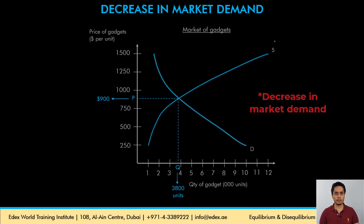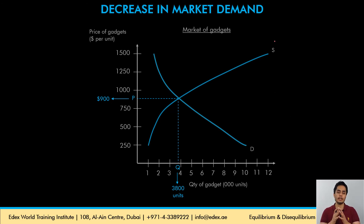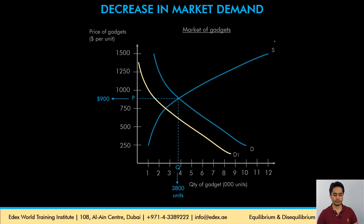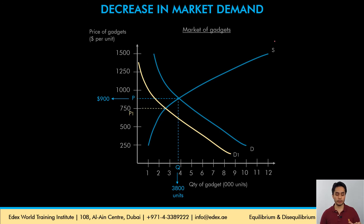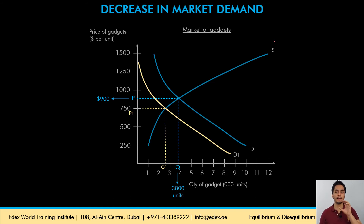If there is a decrease in market demand — due to a fall in income, an increase in taxes, a fall in the prices of substitutes, or an increase in the price of complements — the demand curve shifts to the left. At the current price level, the quantity supplied is 3,800 units but the quantity demanded reduces. As a result, there will be a surplus in the market. The surplus will push the price down from P to P1 and decrease the market quantity from Q to Q1.